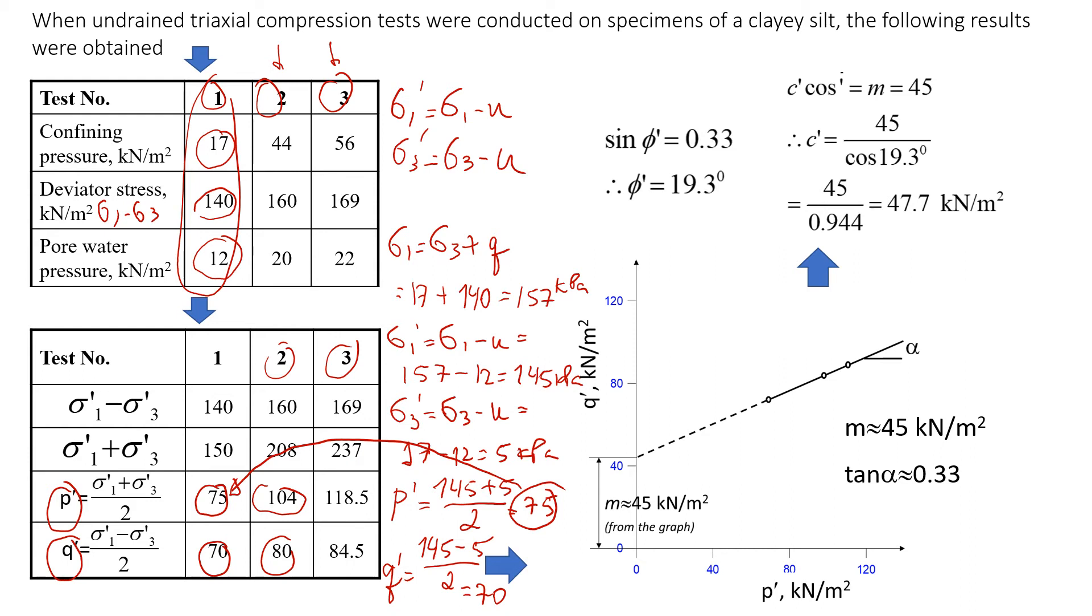We're going to get these values p dash and q dash for each test - for test 1, test 2, test 3. And then we're going to plot it. I already plotted it here. This is value p dash, this one is value q. And then we have three values. The first values are 75 and 70.